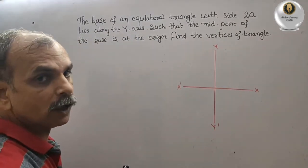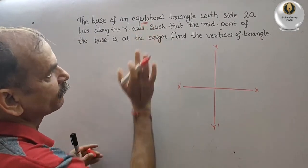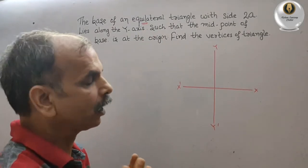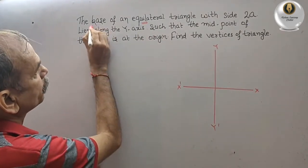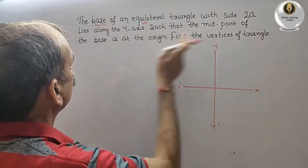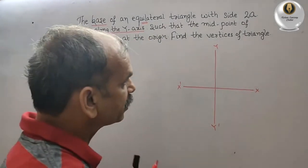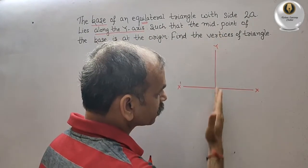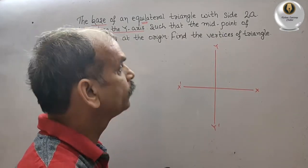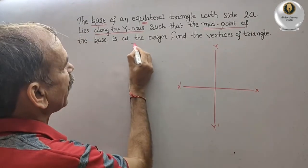Now it's an equilateral triangle first, that means all the three sides are equal. The base of an equilateral triangle with side 2a lies along the y-axis. That means base should be like this.